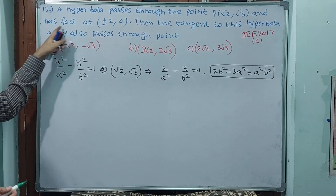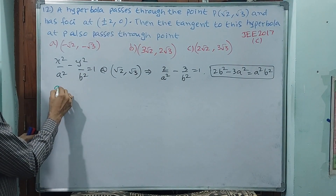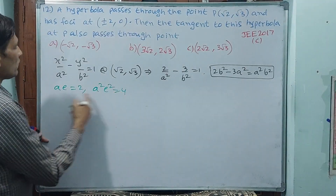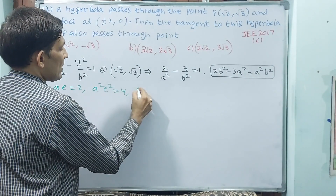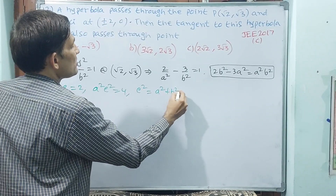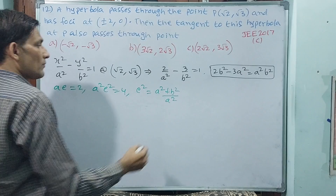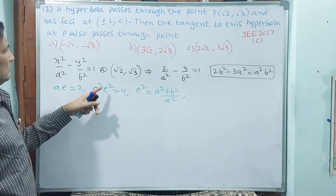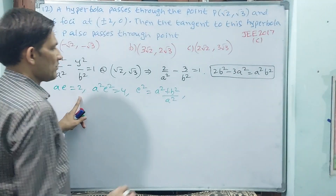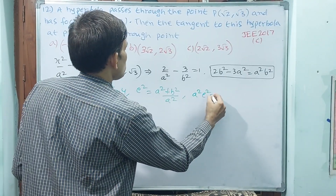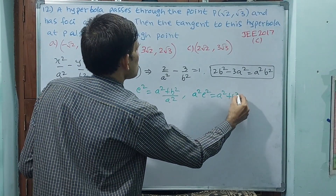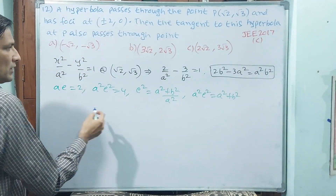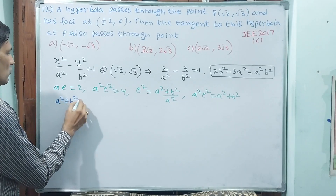Now another condition: the focus is at ±2, which means ae equals 2, so a squared e squared equals 4. Using the formula a squared e squared equals a squared plus b squared, we get a squared plus b squared equals 4.